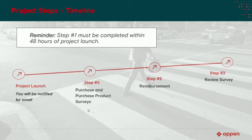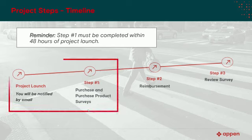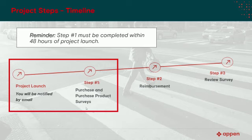The first step is to complete your purchase and purchase product survey. Please be informed that our timeline for each launch is always updated on the AMUR project page, so please make sure you are aware of this timeline and look for our communication regarding the launch announcement. All raters who are selected to participate in the launch will receive the email communication on the start date of the launch. Remember, you must complete this step within 48 hours of the project launch.